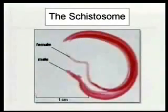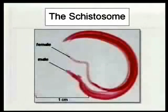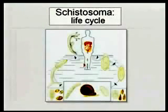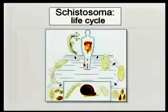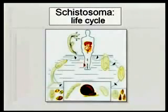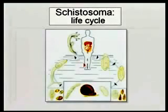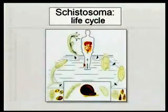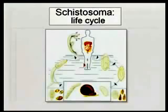Morphologically, schistosomes are leaf-like and have separate male and female forms, but they live attached to each other. Regarding the life cycle, humans get infected when bathing or swimming in water infested with these flukes. The obligate intermediate host is certain species of freshwater snails, which are a necessary component for maintenance of these flukes.